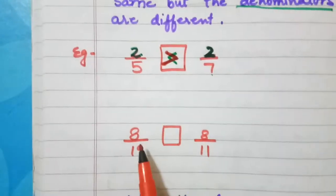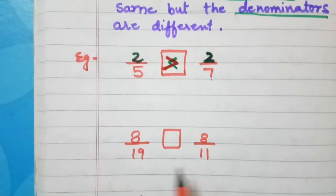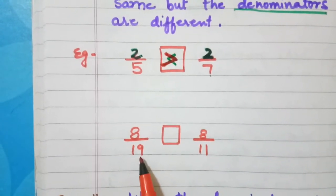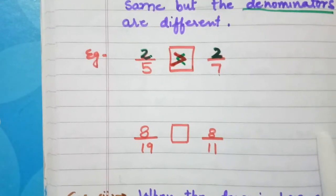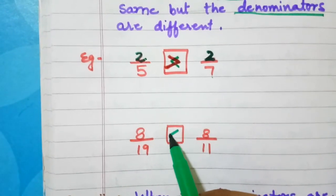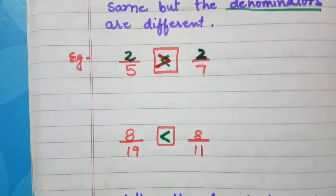Look at the next example: 8 upon 19 and 8 upon 11. The greater denominator is 19. That means 8 upon 19 will be less than 8 upon 11. So we will use this symbol. I hope it is clear.